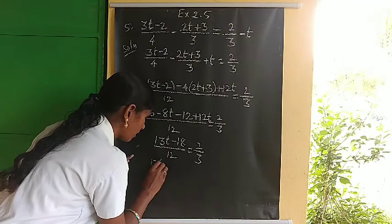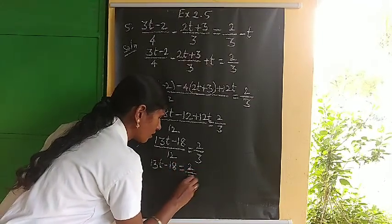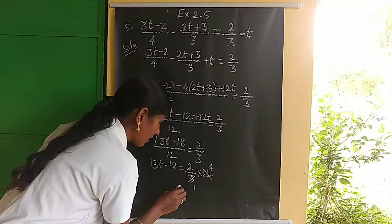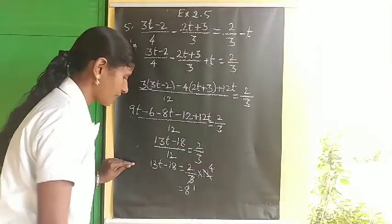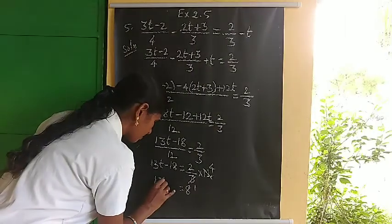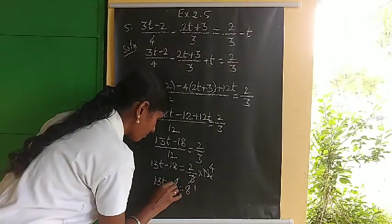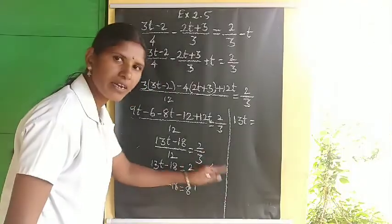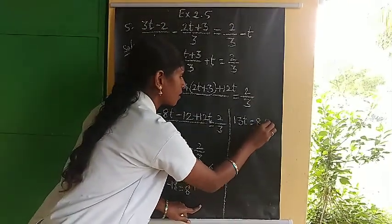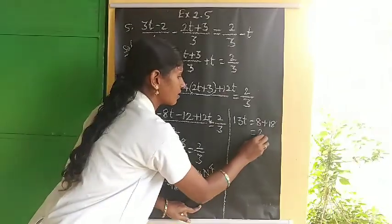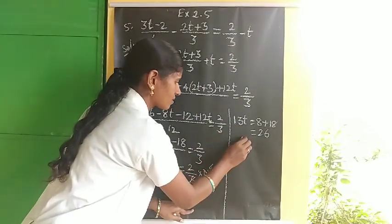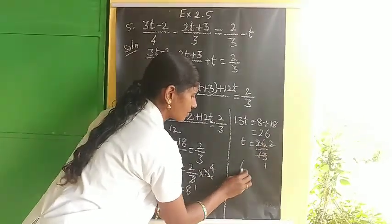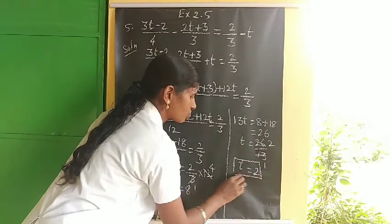Now 13t equals 8 plus 18, which is 26. So t equals 26 divided by 13, which equals 2. Therefore t equals 2 is the required solution.